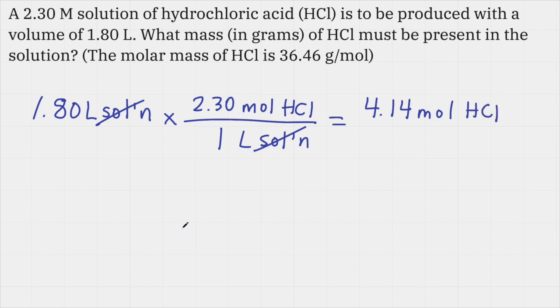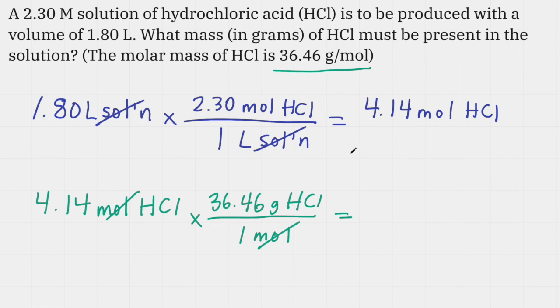But the problem asks for mass in grams, so I need to do one more conversion from moles to grams for HCl. I'll take my value from the previous step, 4.14 moles of HCl, and use the molar mass as a conversion factor. I want to end up in grams, so I'll set up the conversion factor as 36.46 grams of HCl per 1 mole. That'll cancel moles, and I'll end up in grams. I need to take 4.14 times 36.46. That value is 150.94 grams of HCl. To keep it consistent with the problem, I'll round that to 151 grams for three significant figures.